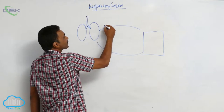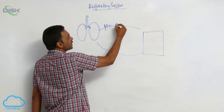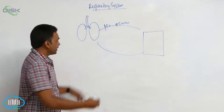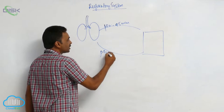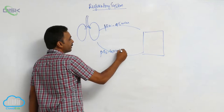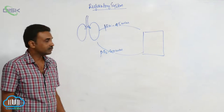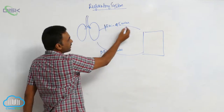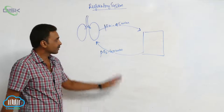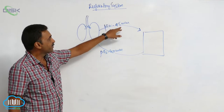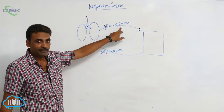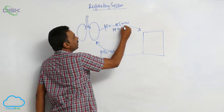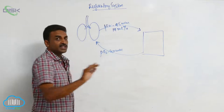The partial pressure of oxygen in the arterial blood is 95 millimeters of mercury, while in the venous blood the partial pressure of oxygen is 40 millimeters of mercury. This is the arterial blood and this is the venous blood. When the partial pressure of oxygen is 95, 19 ml percent of oxygen is present.